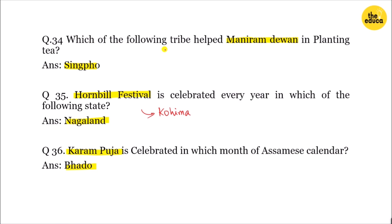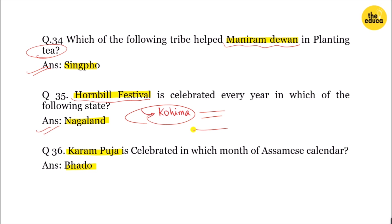Which of the following tribe helped Maniriyam Devan in introducing tea cultivation? The next question is about GI Tags from Assam — which of the following things did not get a GI Tag from Assam?